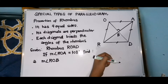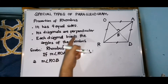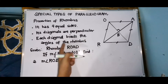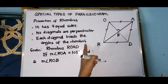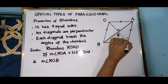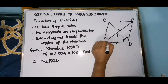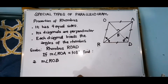And for the next property, each diagonal bisects the angles of the rhombus. So therefore, these two angles ay congruent — same with the other one — so itong dalawang angles na to ay congruent.